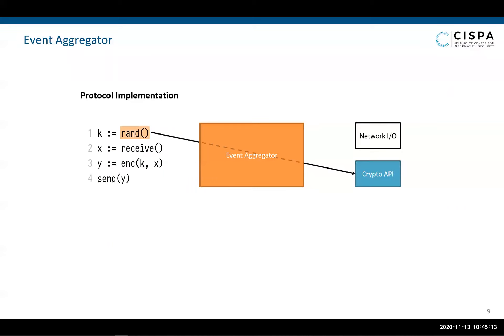The event aggregator observes function calls to cryptographic libraries and network interfaces while the protocol implementation is running. The protocol implementation calls the RAND function provided by some crypto API, which is recognized by the event aggregator. We consider two approaches for the observation of function calls. First, we can instrument common cryptographic libraries, like EverCrypt or FiatCrypto, and network interfaces to issue events when one of their functions is called. Second, depending on the operating system, we can use tracing frameworks like DTrace, Extended Berkeley Packet Filter, or Ltrace to extract the relevant function invocations. Unlike the manual and ad-hoc effort required by static verification techniques, this is an effort once and for all, is not protocol-specific, only depends on the libraries used, and can therefore be shared by different protocol implementations.